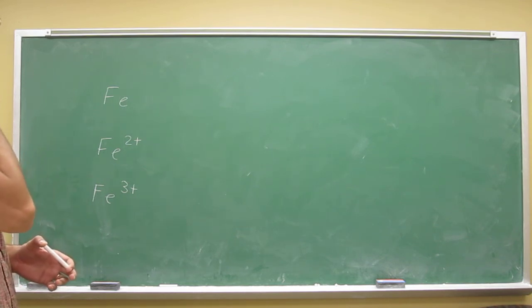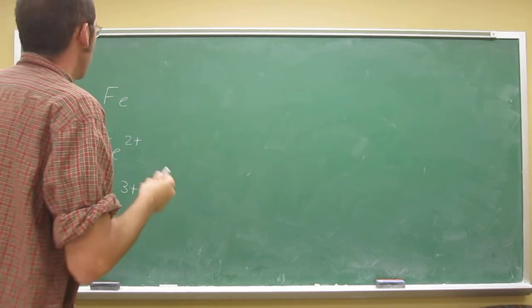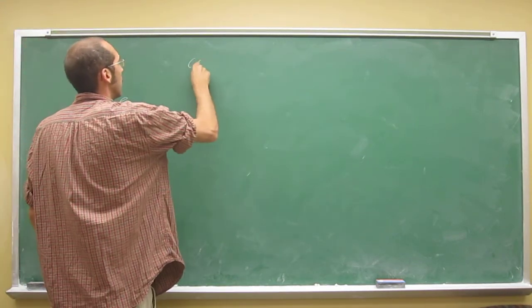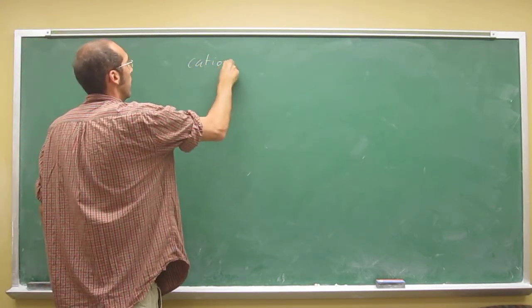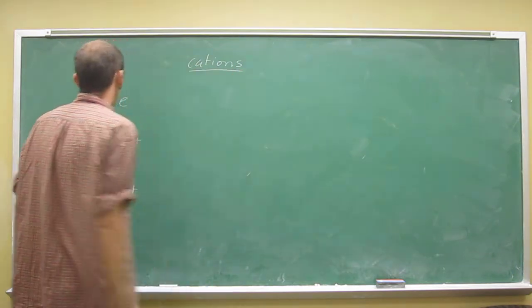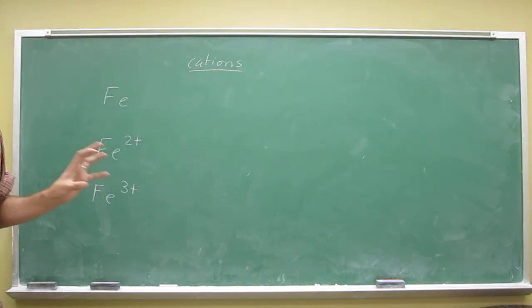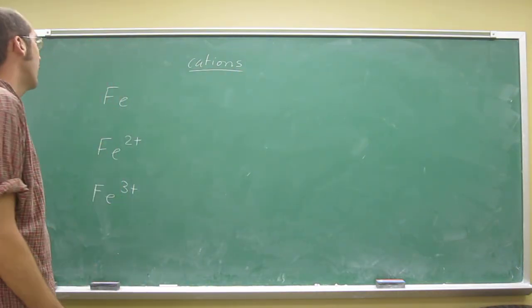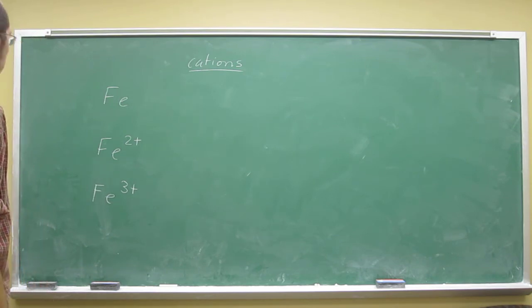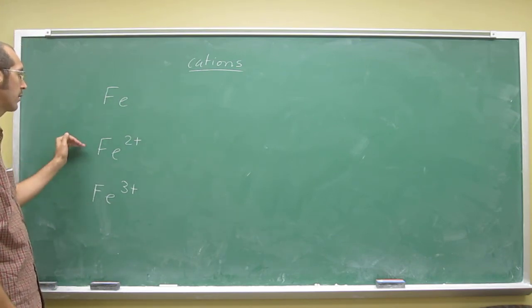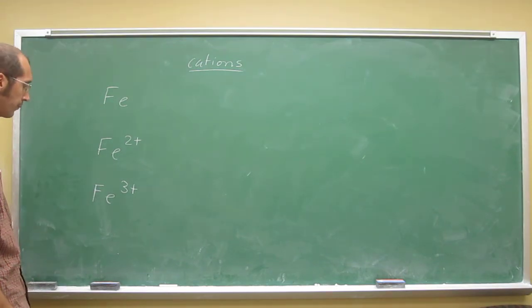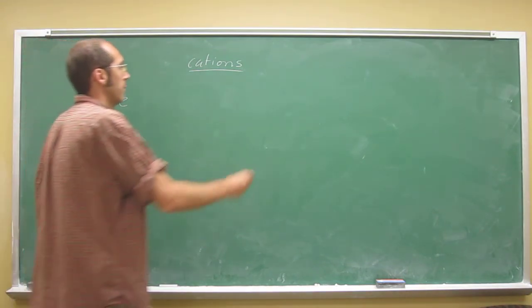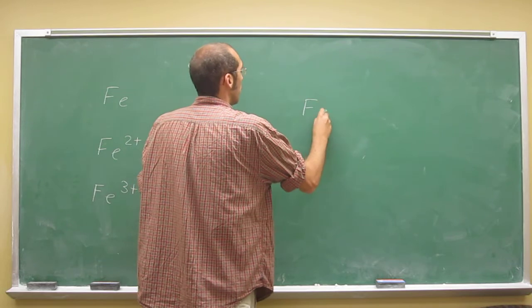Then if you recall that, you should also recall that cations, which these are, are going to be smaller than their parent atom. And so in that case, we know both of these are going to be smaller than this. So that Fe will be the biggest.